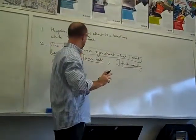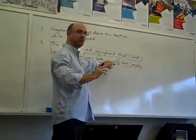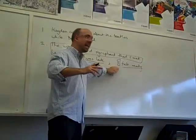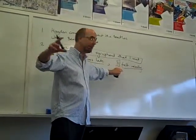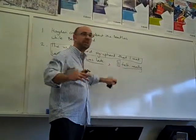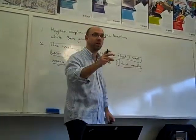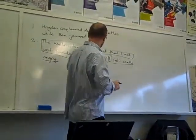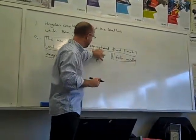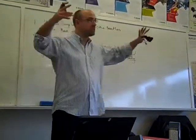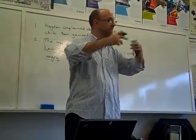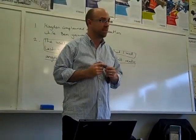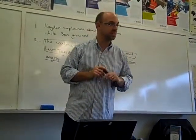A comma breaks up sentences — it doesn't join two sentences. So when you get to somebody else doing something else, a separate actor with a separate action, then it's either a semi-colon or a conjunction. And that's what a comma splice is: it's using a comma to splice two things together that shouldn't be together that way. That's not how we join sentences.